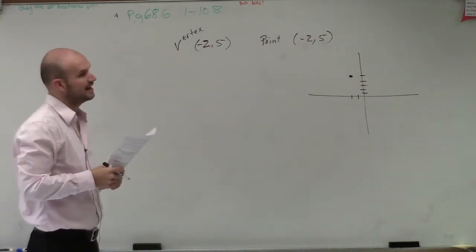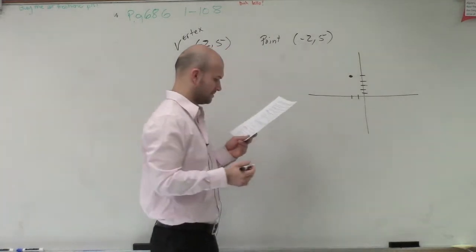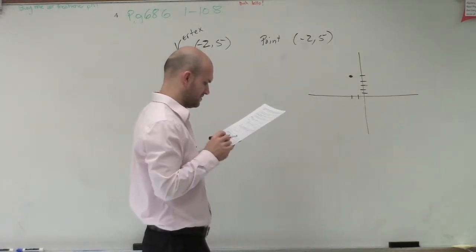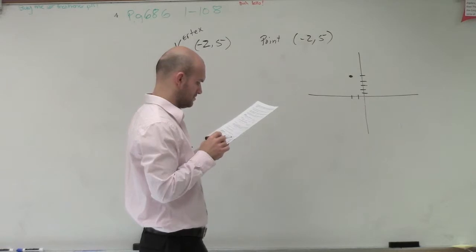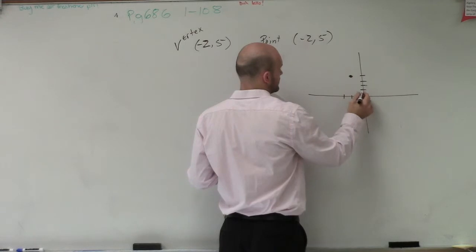Then it says it goes through the point negative 3, 2. Negative 3, up to 1, 2.